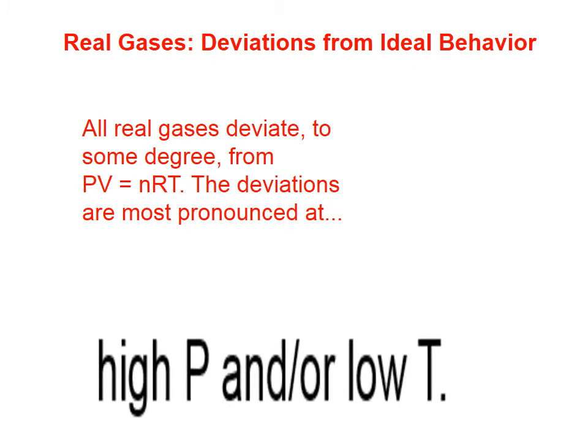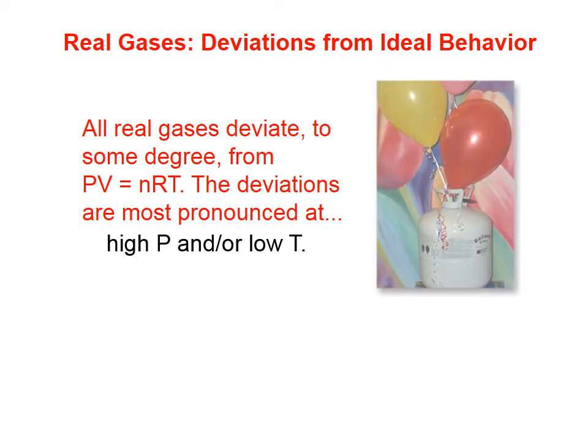The deviations are most pronounced at high pressures and/or low temperatures. In other words, at high pressures, when the particles are very close together, and at low temperatures, when those gas particles tend to be moving pretty slowly, then the ideal gas law really starts to look a little shaky.